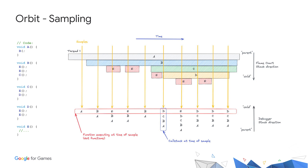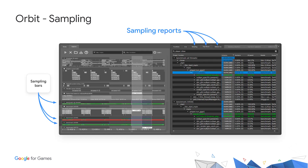In addition to dynamic instrumentation, Orbit offers a powerful sampling profiler. Sampling is the process of periodically getting a call stack for all running threads. Sampling is always on in Orbit, as opposed to dynamic instrumentation which requires user input. Every sample, represented by a yellow arrow, produces a call stack. In Orbit, we can visualize this call stack data in different ways. We present every individual sample on the timeline as a vertical white line — the sampling bars. On the right side, you'll find three different ways of looking at the same sampling data: the flat, top-down, and bottom-up views.